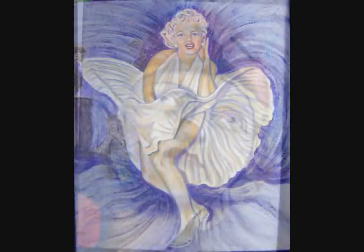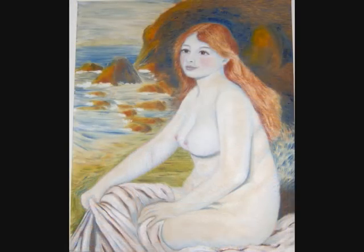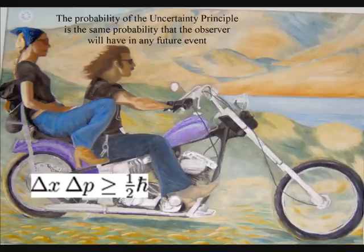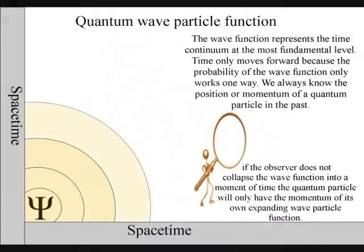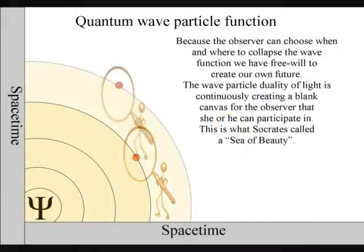This is what Socrates called a sea of beauty. Put in a more scientific way, Heisenberg's uncertainty principle of quantum physics is the same uncertainty that the observer will have with any future event. The atoms of the observer bond together and then collapse the wave function in unison, forming their own unique future position or reference frame in space and time. It is because the observer can choose when and where to collapse the wave function that we have free will.